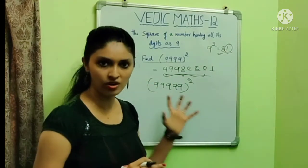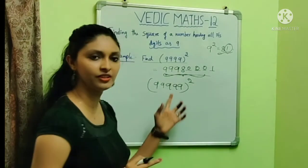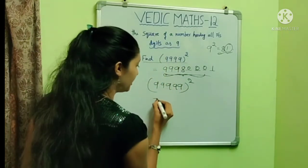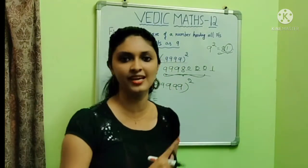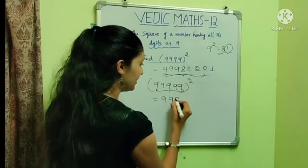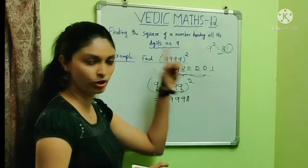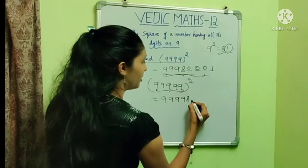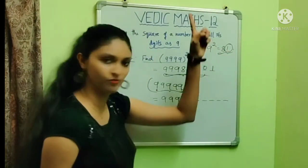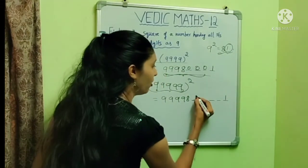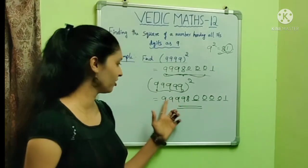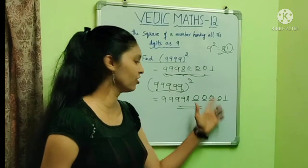The number is so big, but we can easily find the square by using this trick. We make 1 less than the given number — 1 less than 99999 is 99998. As per the rule, we keep 5 vacant places for filling, fill the last place with 1, and all remaining digits as 0. The final answer is 9999800001.